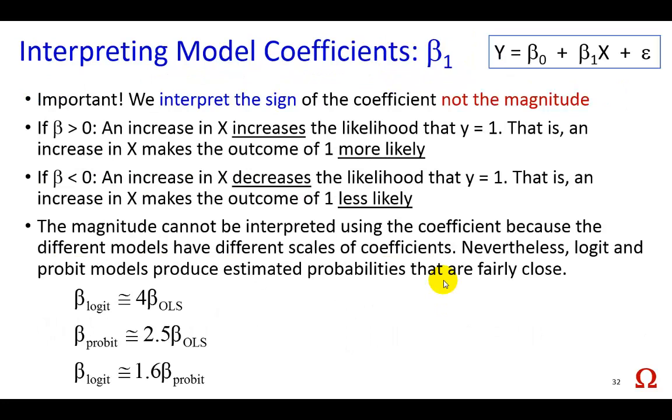Finally, when interpreting the coefficients of the model, we must be careful not to interpret the magnitude of the coefficients, as we would in a linear regression study. Instead, here, in logit regressions, we're going to be interpreting only the sign of the coefficients. For example, if the coefficient, β₁, right here, as in the case of this simple bivariate model here, if it is positive, then it means that an increase in the value of x increases the likelihood that y, the probability of success, is going to be equal to 1.